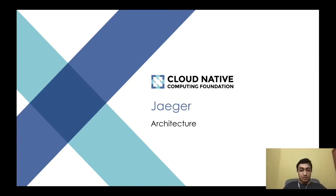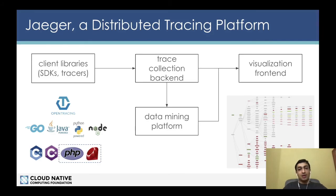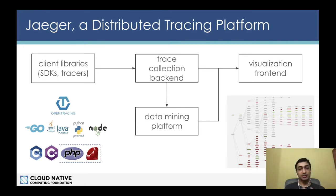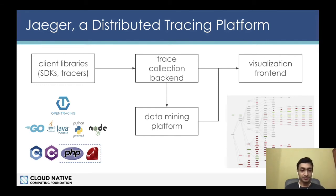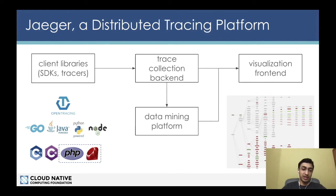Now let's quickly browse through the Jaeger architecture. Jaeger is not just a single binary — it's a collection of services for trace data collection, storage, querying, and visualization. On the left we have client libraries used to instrument the application, typically written in the same language as the application. The officially supported libraries are in Golang, Java, Python, Node, C++, and C#, while PHP and Ruby are community-maintained. On the right side, we have the visualization frontend written in React.js.